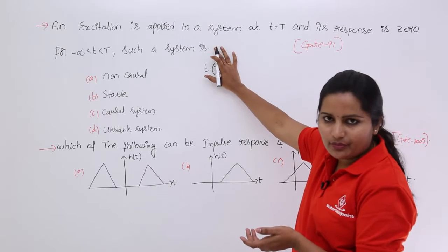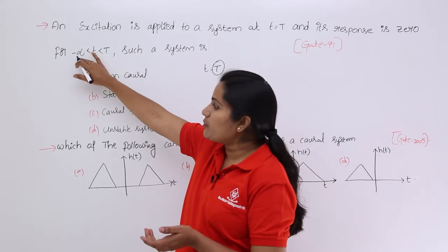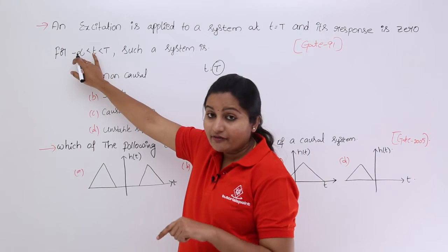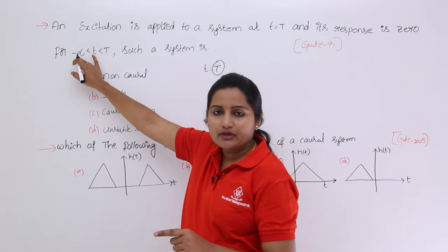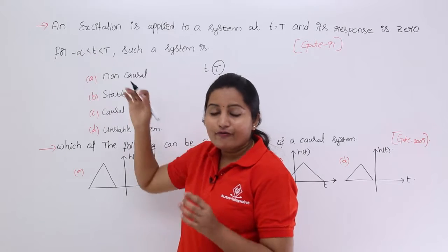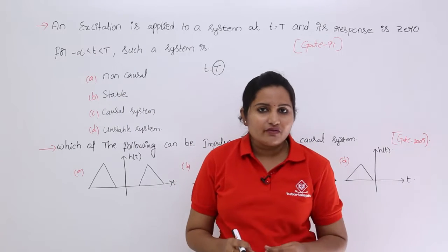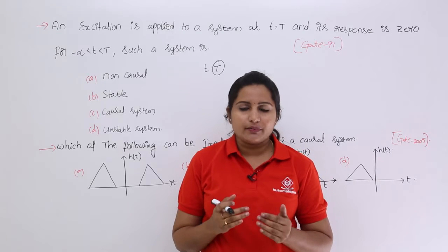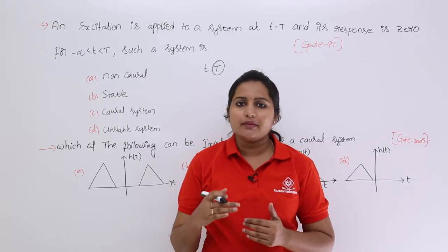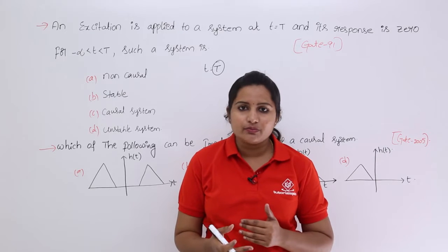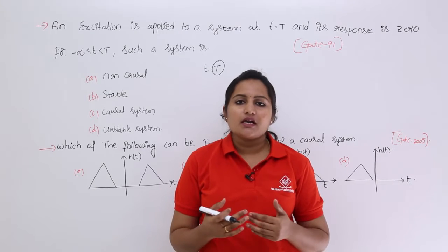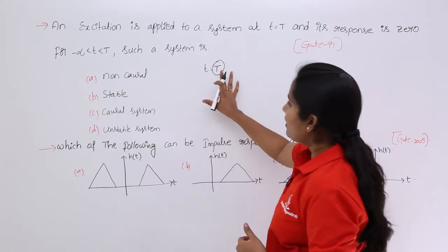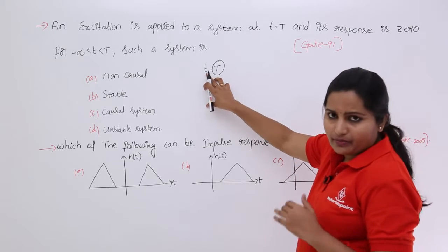Causality can be defined using this time period. For the present input, the response is going to depend upon past input or not — you need to see. If it is dependent upon past input, that is not causal. A system is said to be causal whenever our response for a present input is dependent upon present and past inputs. Otherwise it is said to be non-causal.